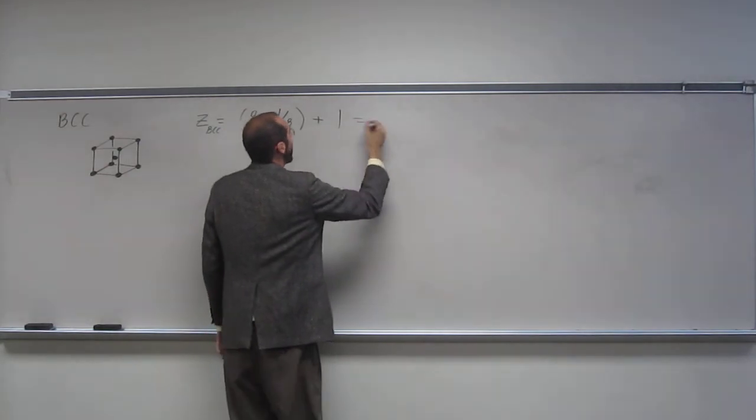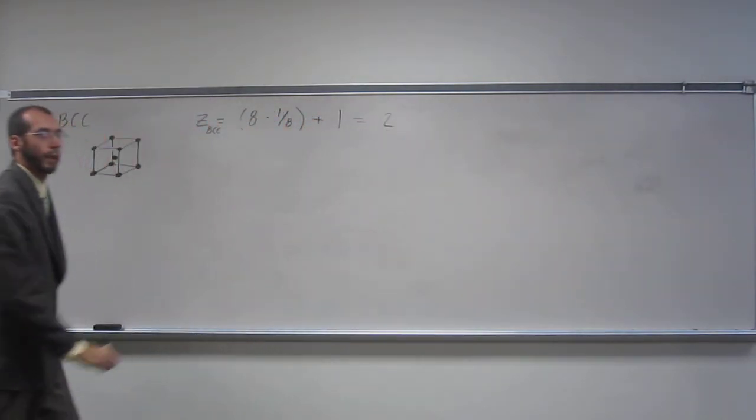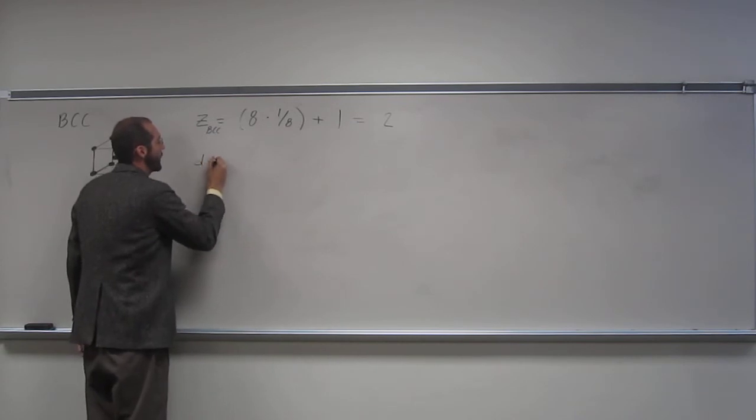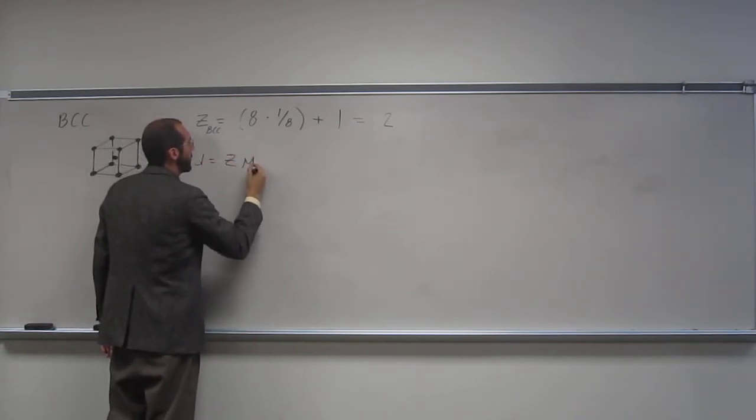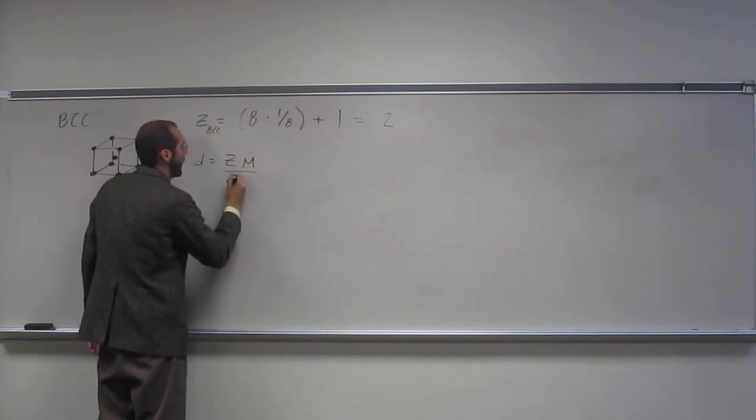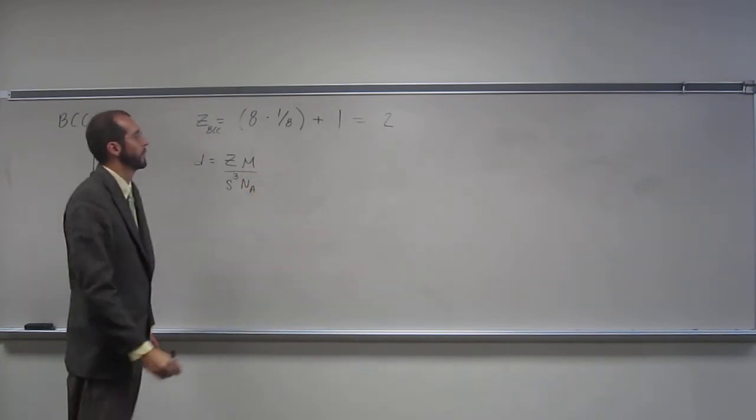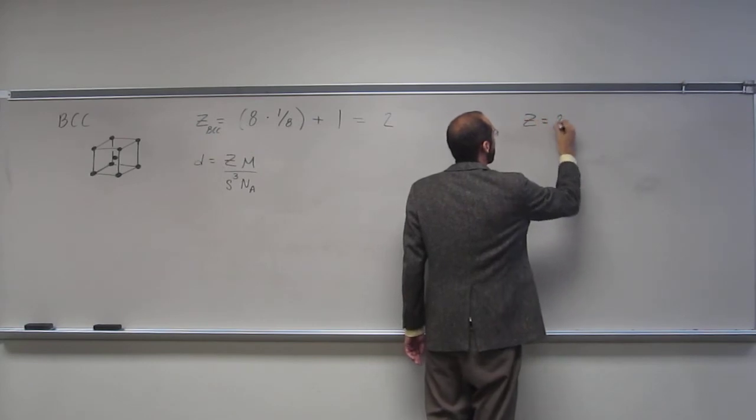Okay, so when you do that, you get one plus one. So that's the first step of doing this. Let's write the formula down. So density equals Z times molar mass divided by psi cubed times Avogadro's number.